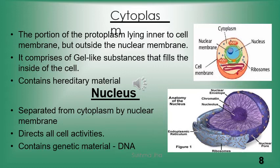Inside the cell there are different cell organelles which perform specific functions. The first is cytoplasm — cyto means cell and plasm means liquid. The portion of liquid or protoplasm present between the nuclear membrane and the cell membrane is known as cytoplasm. It is a gel-like structure that contains other cell organelles.